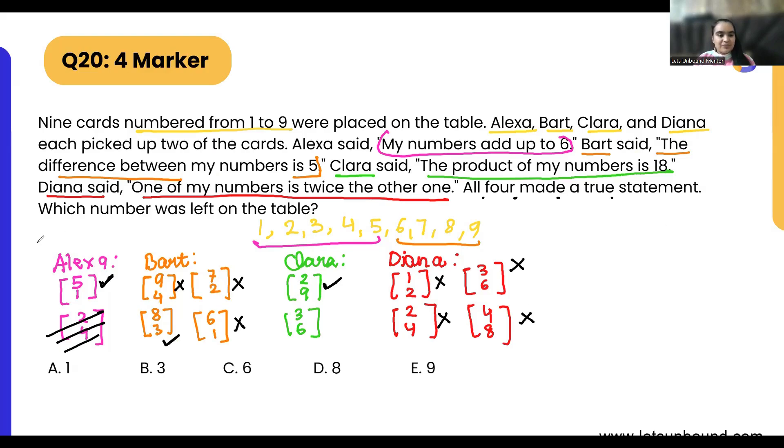So maybe what we can do is let's assume that Diana is having three and six. So we need to again remove this. This is now done. So we are assuming now that Clara is having three and six. Now we are going to remove all the other options which have three and six. So this option will be eliminated, and then this option is going to get eliminated.